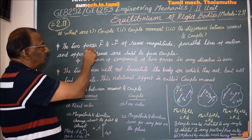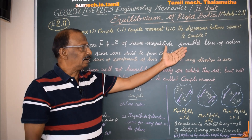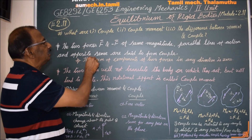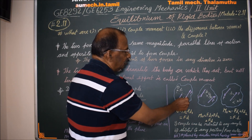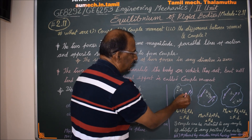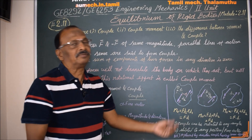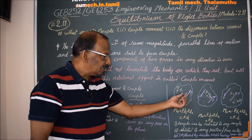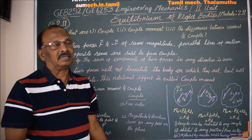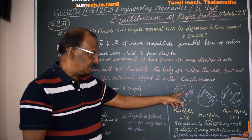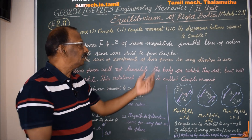The two forces, vector F and minus vector F, of the same magnitude, with parallel lines of action and opposite sense, are said to form a couple. Here is a force, and here is another force. The distance in between is D. One force is F and the other is minus F — opposite in direction, parallel and opposite in sense. This set of two forces is a couple.